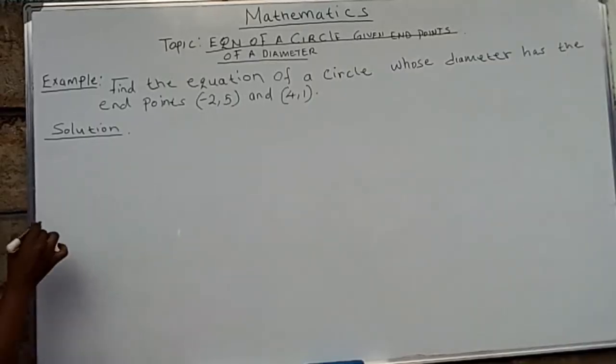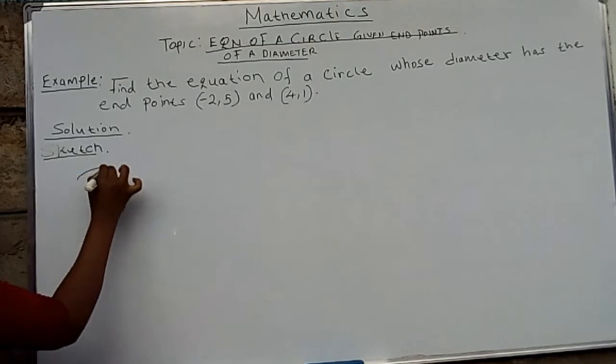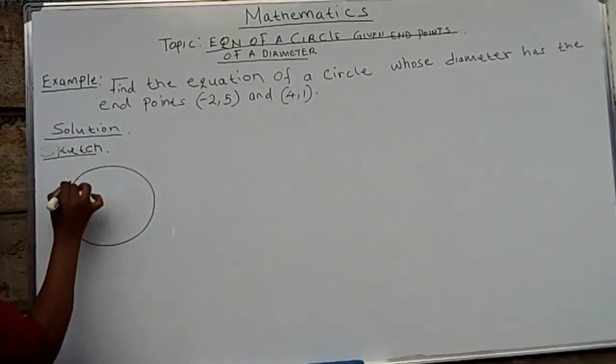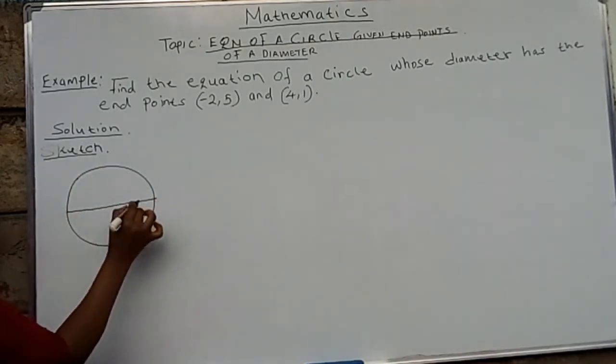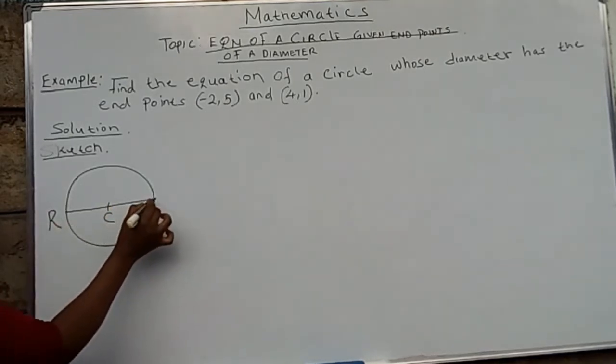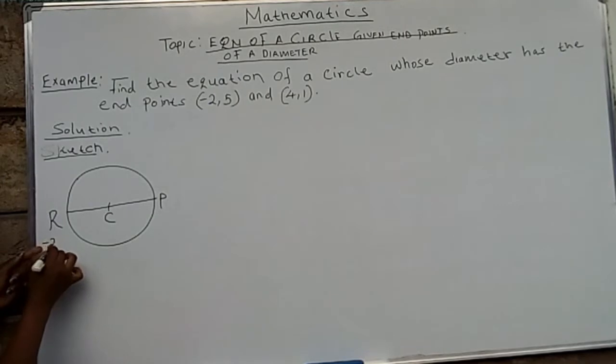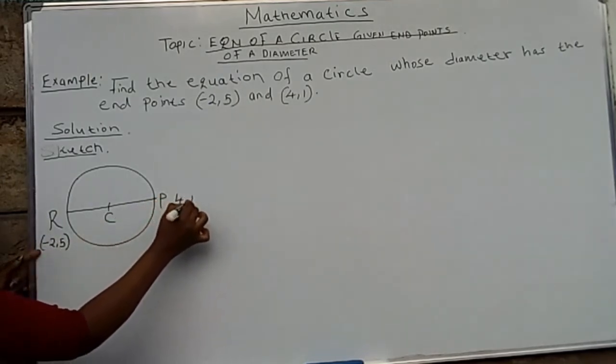So the first step is to sketch. We have our circle over here. This is the diameter. Maybe we can call this center of the circle C, and we can call this one R and P. So we know the endpoints of the diameter: we have (-2, 5) and we also have (4, 1).